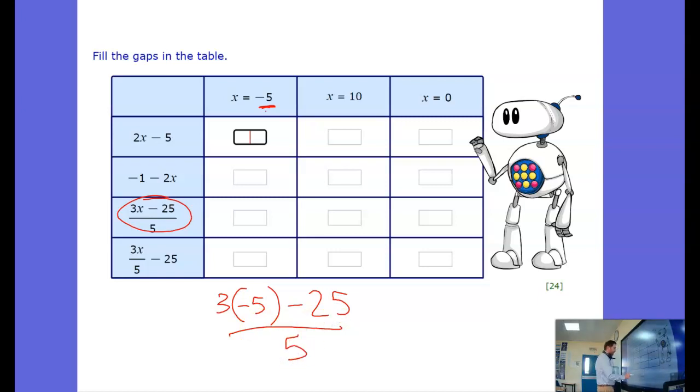3 lots of minus 5 is negative 15. Negative 15 minus 25, let's just write it out. Negative 15 minus 25 that's negative 40, and then divide that by 5 is negative 8.